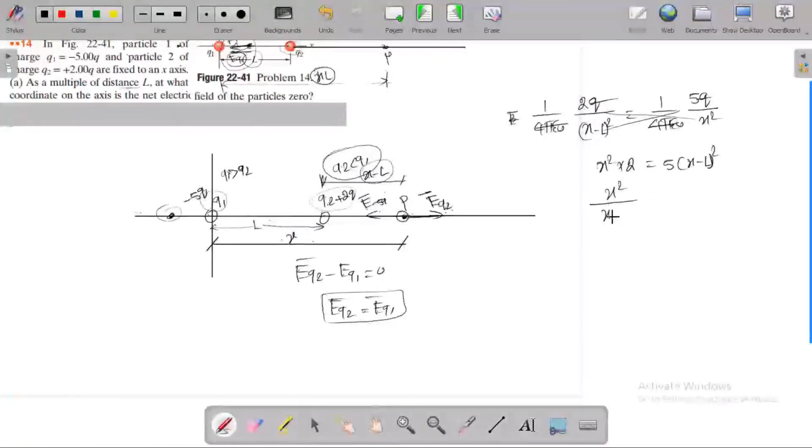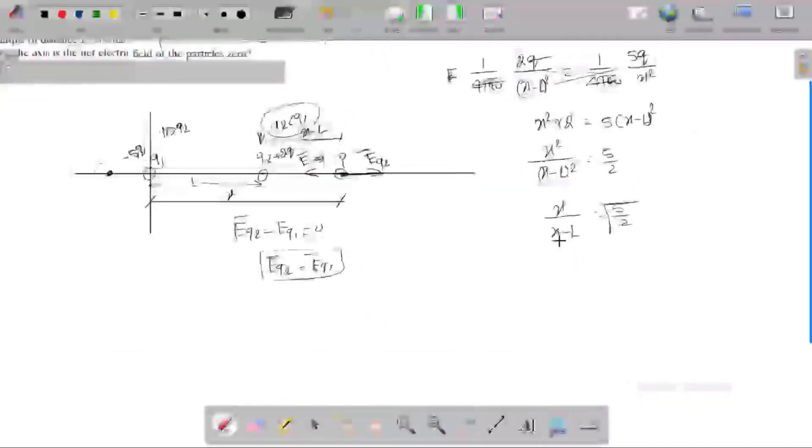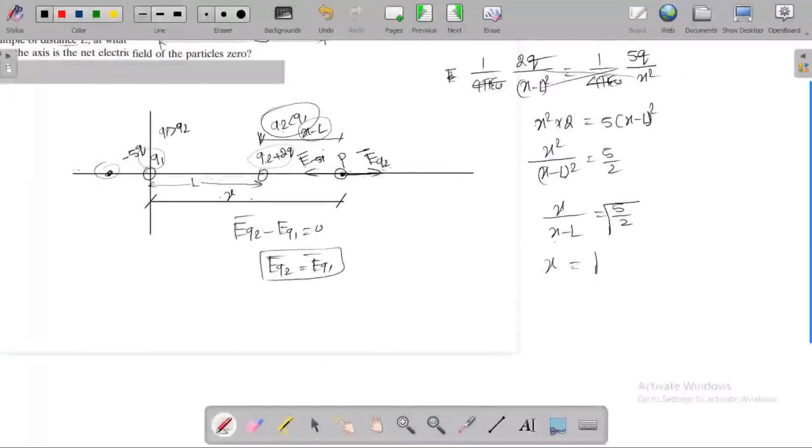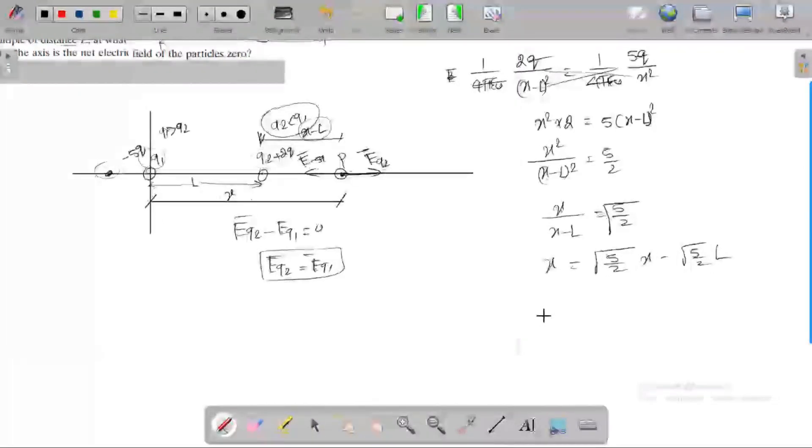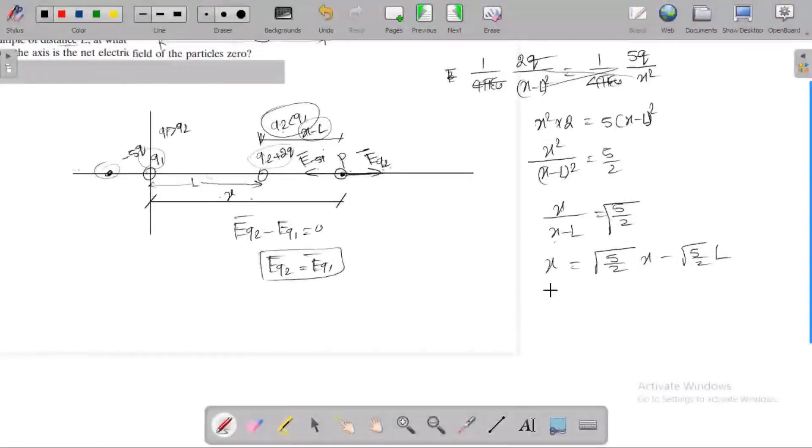2x squared equals 5(x minus L) squared. So x squared equals 5/2. Taking the square root, x divided by (x minus L) equals square root of 5/2. Solving for x, x equals (x minus L) times square root of 5/2, which gives x equals L times square root of 5/2 divided by (square root of 5/2 minus 1).